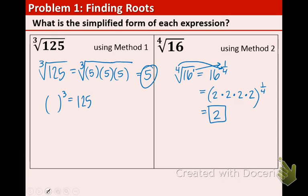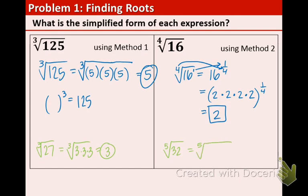Here are a few quick examples. The cube root of 27 is 3 times 3 times 3 underneath, so the cube root of 27 equals 3. The 5th root of 32 — what number do you multiply by itself 5 times to give you 32? The answer is 2, since 2 times 2 times 2 times 2 times 2 equals 32. So the 5th root of 32 is 2.